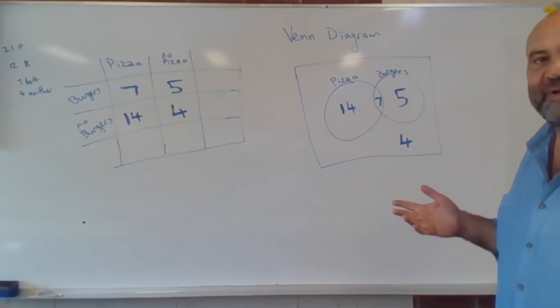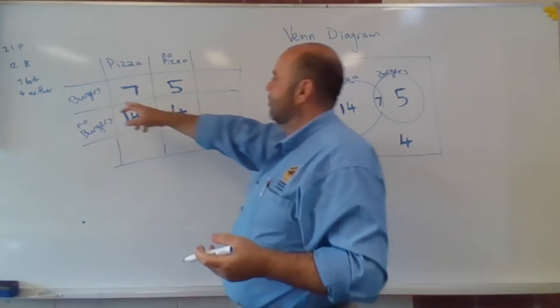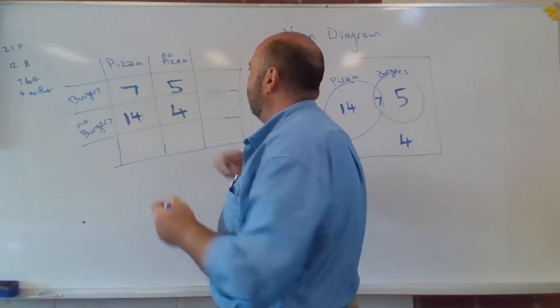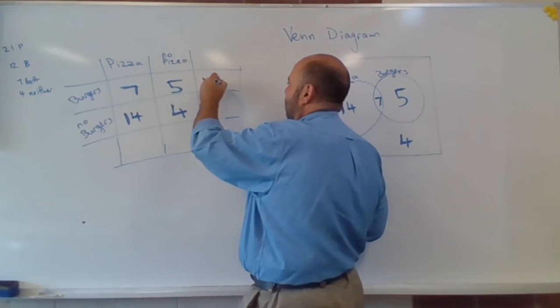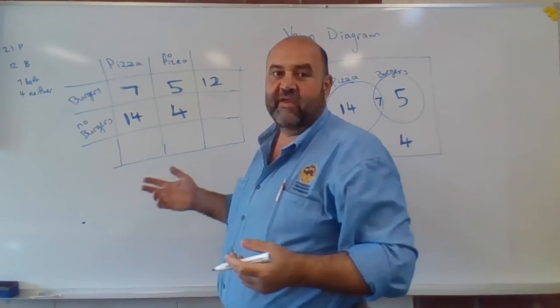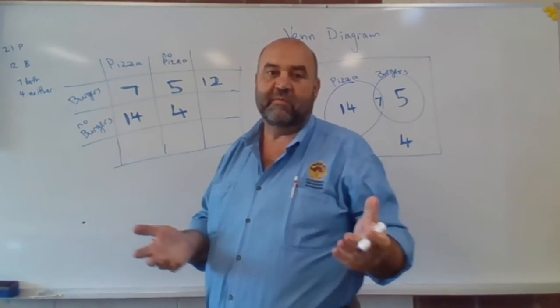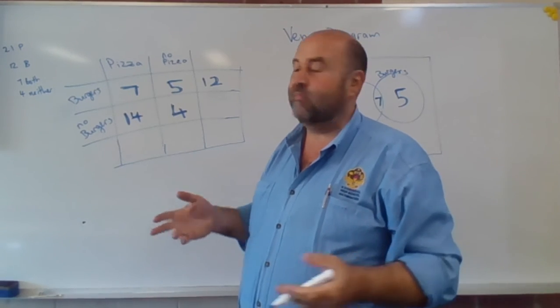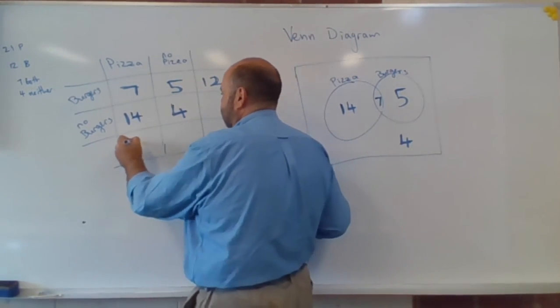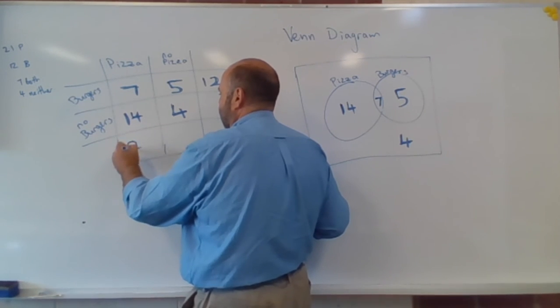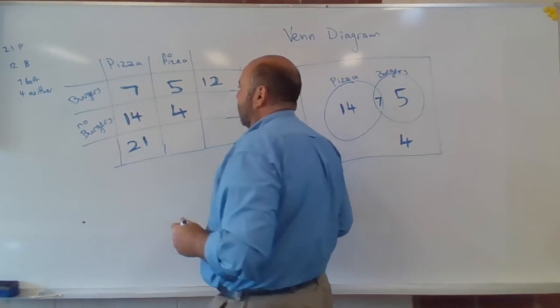And now all we need to do is just add up our rows. So people who like burgers is seven and five, that's 12 people. Well, that agrees with what we originally said. There were 12 people who liked burgers. People who like pizza, well, seven and 14 people, that was 21 people.